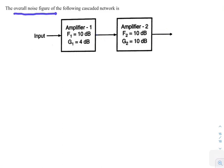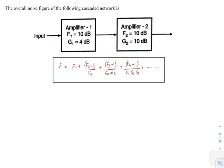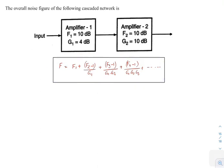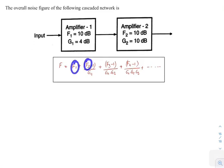In order to find out the overall noise figure of the following cascaded network, we have to use Friis formula. This formula is used when amplifiers are connected in cascade where F1, F2, F3, F4 and so on are the noise factors.